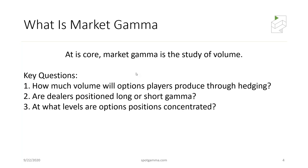Number one: how much volume do option players produce? Obviously if there's more options trading in a name, there's more hedging and more impact from options market makers. The second question is: how are dealers positioned — are they long calls or short calls, net long puts or net short puts? Based on how dealers are positioned — long or short options — we can then produce volatility estimates.